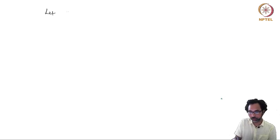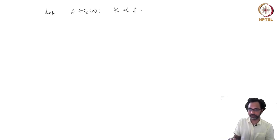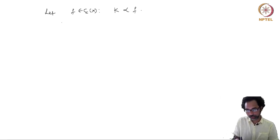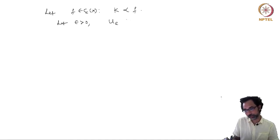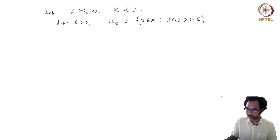Now we prove the reverse inequality. Let f ∈ C_c(X) such that K ≺ f; we need to find an open set u such that f ≺ u. For ε > 0, set U_ε to be the set of all points x in X such that f(x) > 1 − ε. Because f is continuous, this set is open.